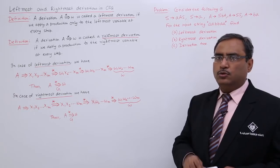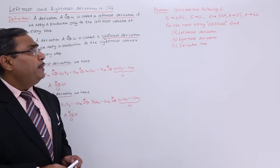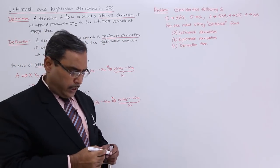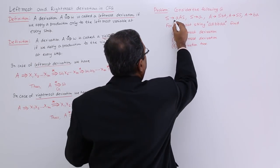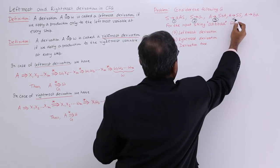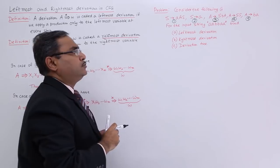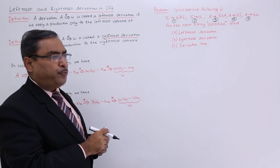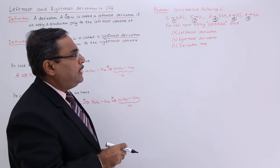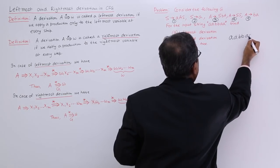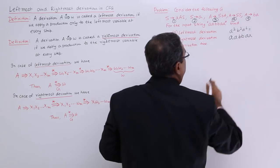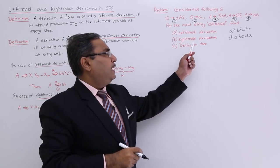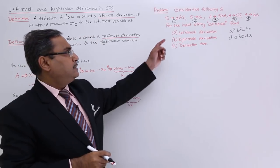To make the concept clear, let us go through one example. One problem is given: S produces AAS, S produces A, and other production rules are given. For simplicity, I am numbering them — let them be 1, 2, and so on. When I apply them, I can mention the number so you can understand which production rule has been applied. We have 5 production rules. For the input string AABBAA — that is A-squared B-squared A-squared — this string has to be generated from this grammar. Find leftmost derivation, rightmost derivation, and derivation tree — three sub-parts.